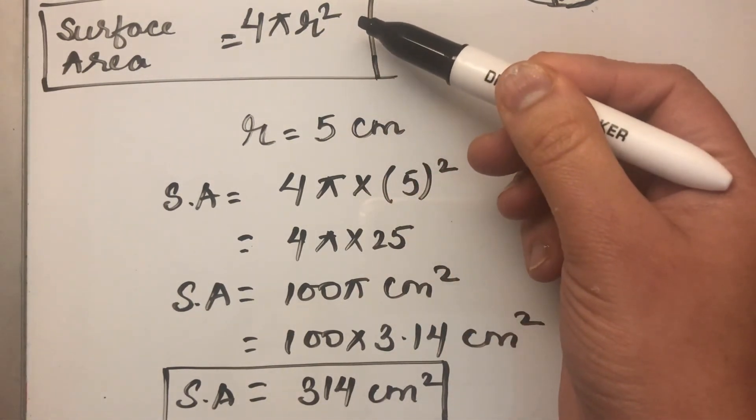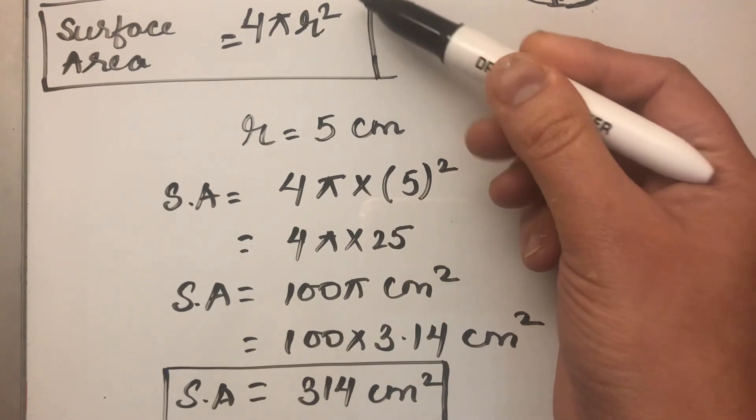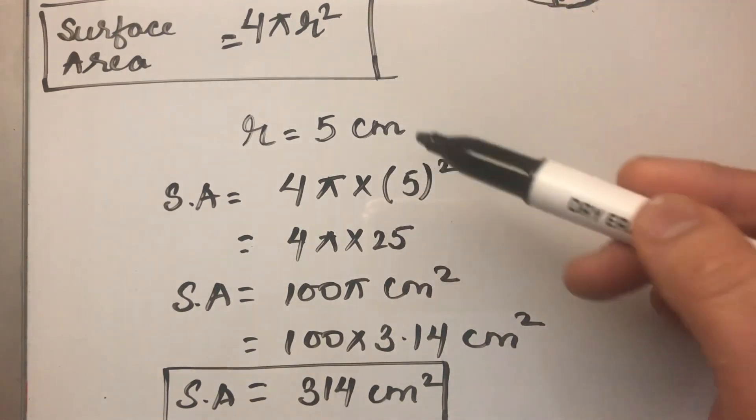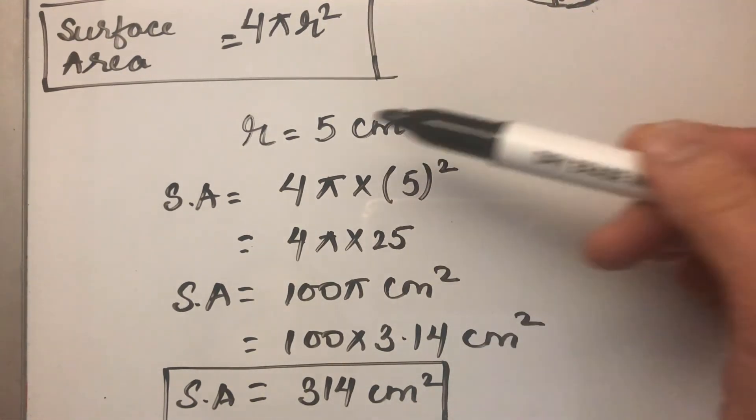This is the formula to find the surface area of the sphere, which is 4πr². We just need to find the radius of the sphere and put the value in the formula.